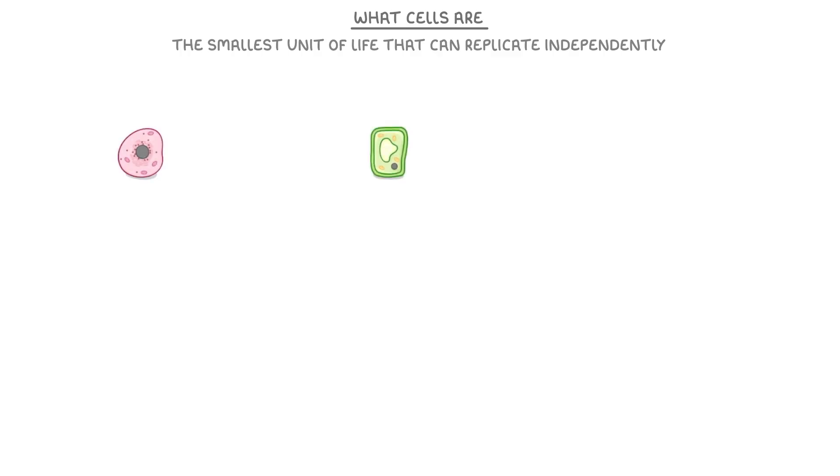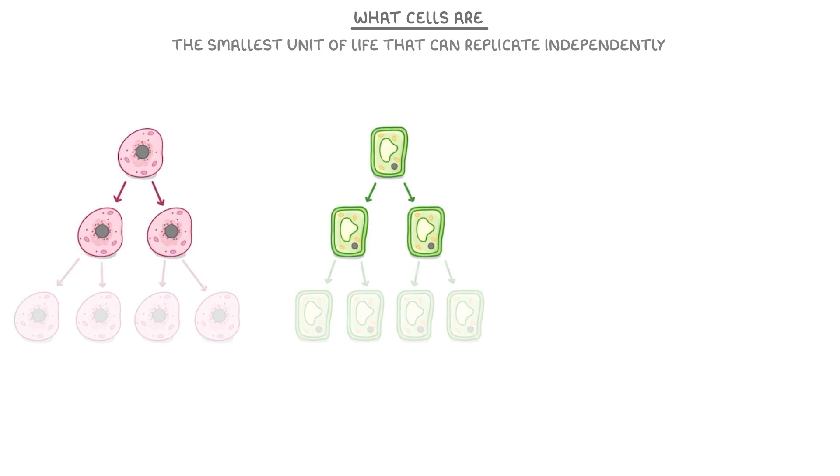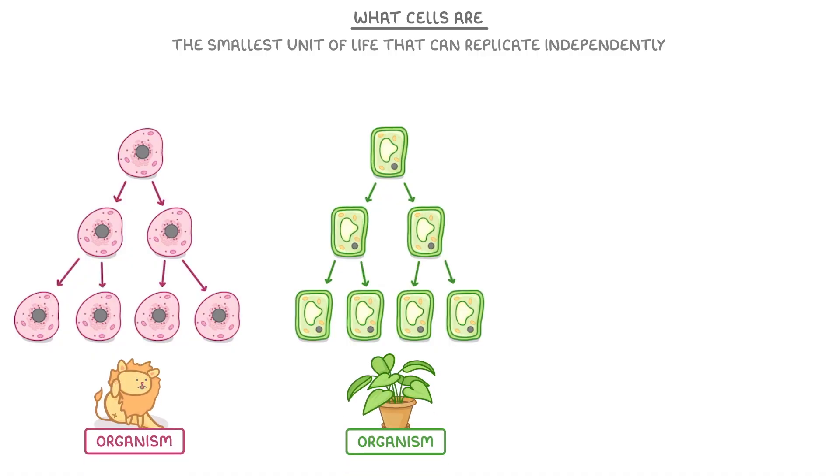So if we took an animal or a plant cell, they could divide into 2 cells, then into 4 cells, and so on. These cells are all combined together to make up an organism.